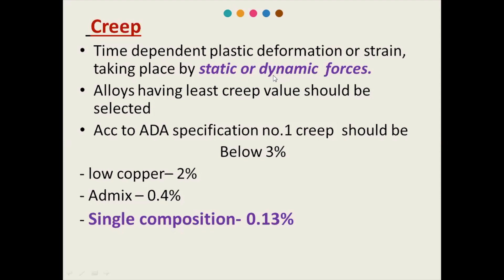Alloys having the least creep value should be selected. According to ADS specification number one, creep should be below 3 percent. Low copper amalgam has 2 percent creep, admix alloy has 0.4 percent creep. In comparison, single composition is having the least creep value, that is about 0.13 percent.